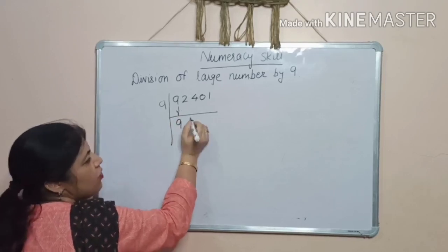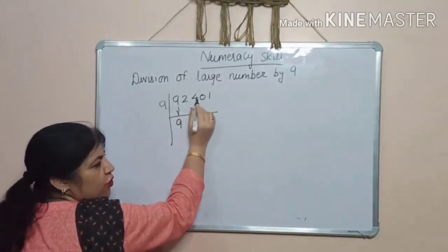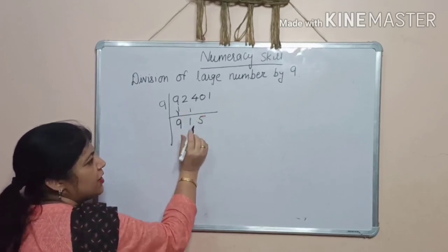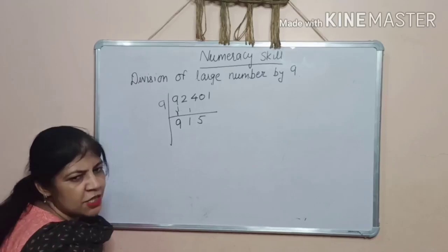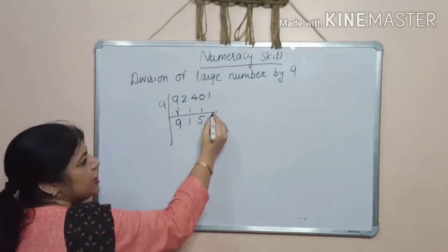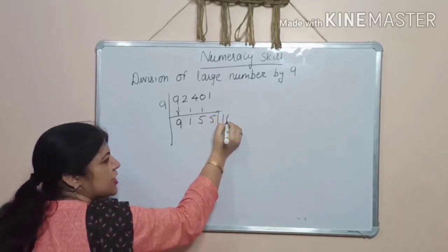Now, 11 plus 4. 15. We will write 5 here. And 1 will come here. Now, again 15 plus 0. 15. So, 5 will come here. 1 will here. Then 15 plus 1. 16.